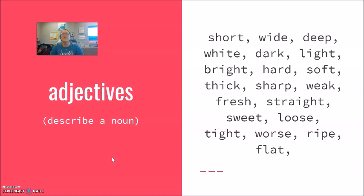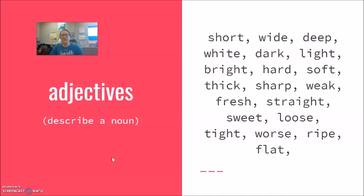The purpose of this suffix EN is to add the meaning of 'to make.' So when I take the word dark and I add EN, the meaning is 'to make dark.' For example, I'm going to hang some curtains to darken the room. My baby can't sleep at night, so I darkened the room with some curtains.